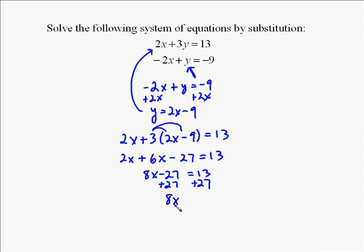Then we're going to solve for 8x by adding 27 to both sides, so that gives us 8x equals 40. We divide both sides by 8, thus x equals 5. So the x part of our solution is 5.